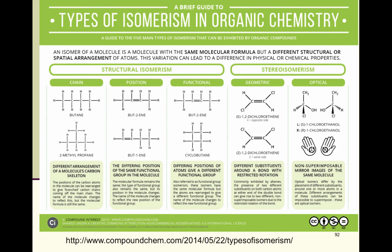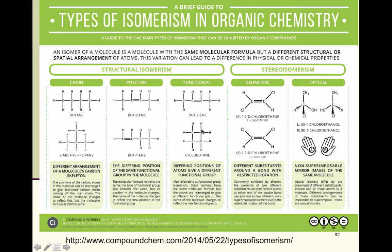Here is a poster from compoundchem.com showing types of structural isomers. Note: the creator is from Great Britain and names double bonds slightly differently than we will, so don't worry about that naming for now. We have chain isomers, functional isomers, geometric isomers (cis/trans), and optical isomers. Optical isomers will be covered next semester, and we will be doing double bonds very shortly.